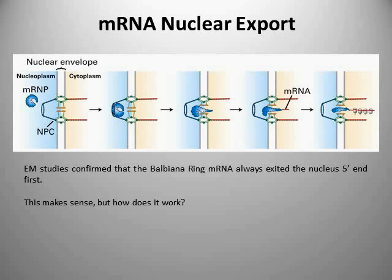That makes a lot of sense because you want gene expression to be very efficient. As soon as the mRNA starts peeking out of the nuclear pore complex, ideally you want ribosomes to be able to bind to it and start translating it into protein. Ribosomes can only do that if it's the 5' end — the bit with the start codon — that comes out first. And that's what happens: the 5' end comes out first, ribosomes bind to it, and in fact we think the binding of ribosomes and the process of translation may actually be important for ratcheting the mRNA from the nucleus — helping it to get pulled through the nuclear pore complex.